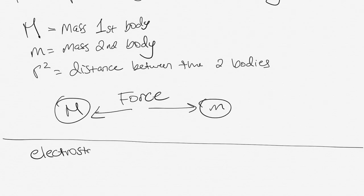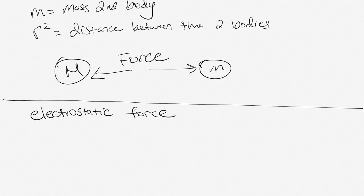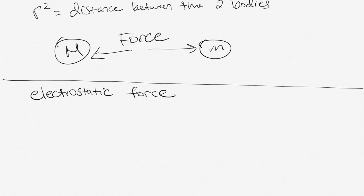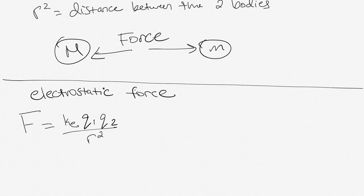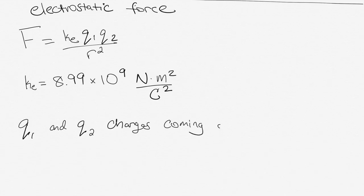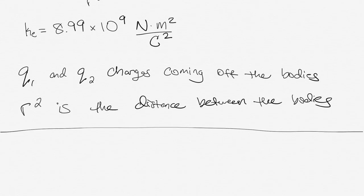Now we want to look at the electrostatic force between objects, because there's an electrostatic force that comes off objects and is exerted onto one another, which would cause either an attraction or repulsion of the bodies of mass. The equation is F equals Ke times q1 times q2 over r squared. Little ke is Coulomb's constant. The value is 8.99 times 10 to the ninth newtons times meters squared over c squared, where q1 and q2 are the electrical charges coming off the two bodies. And r squared is again that distance between the two bodies.